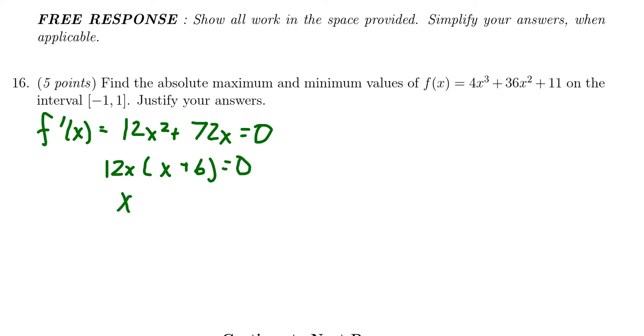So our critical numbers turn out to be x = 0, which comes from the 12x if you set that equal to 0, and then you're going to get -6 from the factor x + 6. Now, x = -6, we can discard that one because that's not inside our domain.